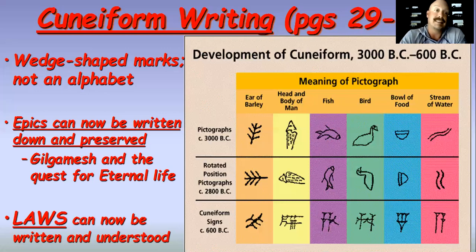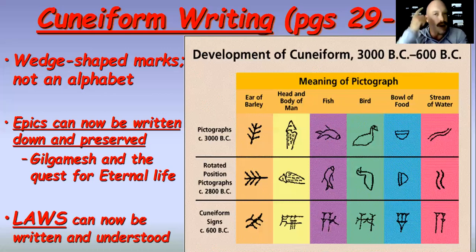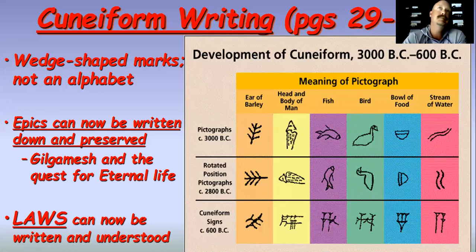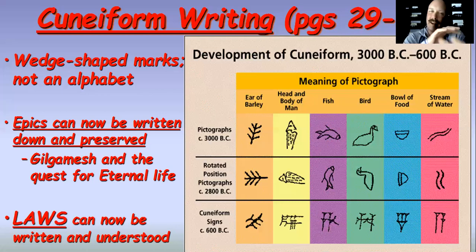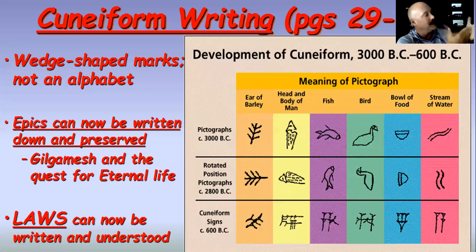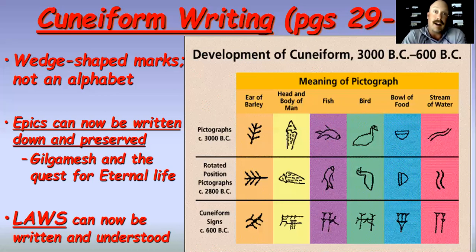Another interesting thing — laws can now be written down. What we're going to see is Hammurabi's code. The Mesopotamians are able to write laws down. When the law isn't just in the head of the eldest male judge of the town, but is written and set in stone, you can say 'that's the law' and apply it equally. Just as the law is this for one man, the law must be this for another man. That's the important thing — laws can be written down.